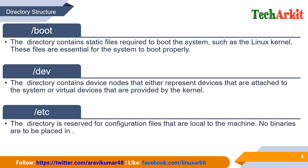The /etc directory is reserved for configuration files that are local to the machine. No binaries are to be placed in /etc — it should not contain any executable binaries or scripts. It is mainly used for local configuration file storage. Most software configuration files are stored here. If you want to read a configuration file, you go to /etc and look under its subdirectories and files.